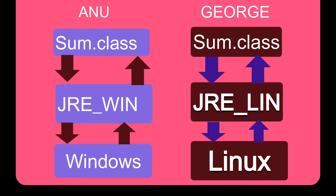We can run Windows and Linux. Java is a platform independent language. Java is a program. It depends on the output, it depends on the class file. The class file is the same as the platform. The class file is the same across operations. It depends on Windows and Linux. We can run Windows and Linux. The key idea is platform independent.